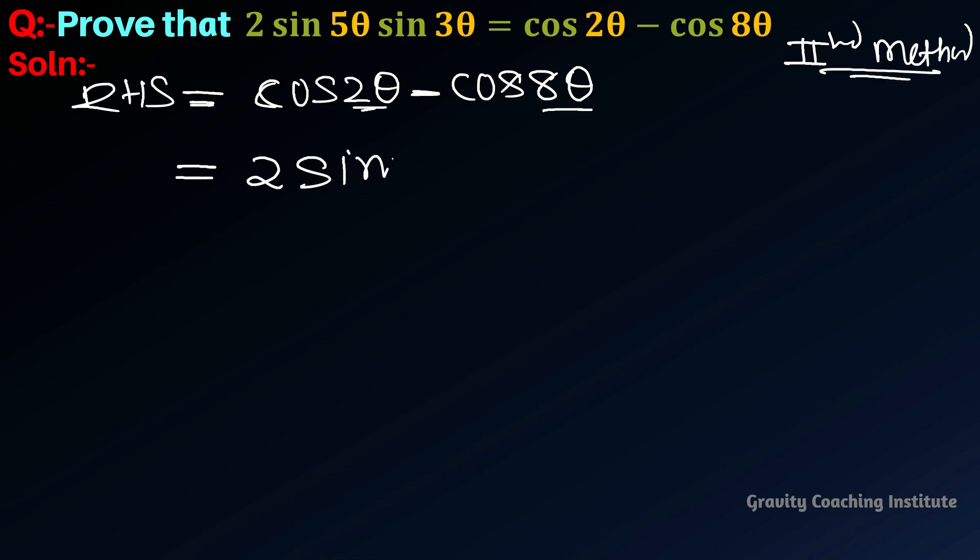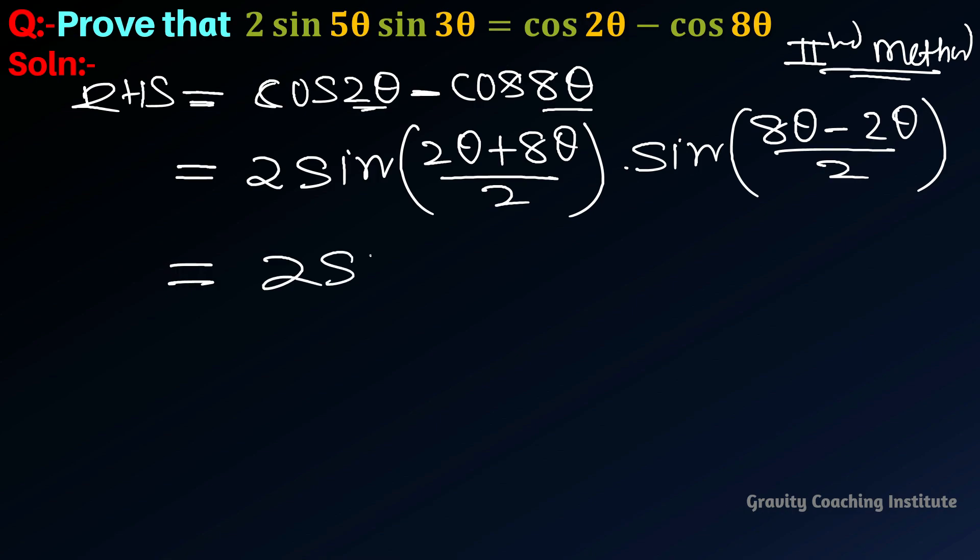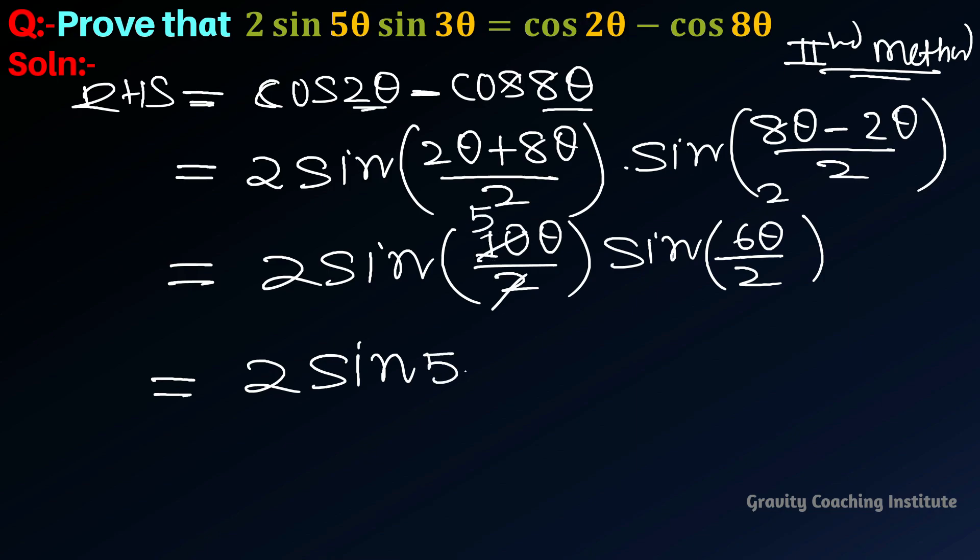According to this formula: 2 sin[(2θ + 8θ)/2] sin[(8θ - 2θ)/2] = 2 sin(10θ/2) sin(6θ/2) = 2 sin 5θ sin 3θ.